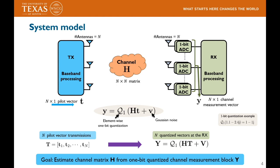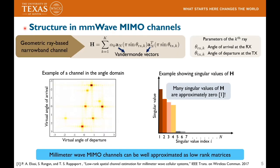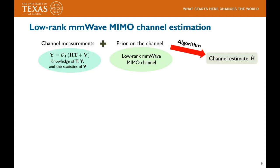Before I get into the details of channel estimation, let me explain about structure in mmWave MIMO channels. We consider a geometric ray-based narrowband channel where the matrix H can be expressed as a linear combination of several rank-1 matrices, each corresponding to a propagation ray in the environment. MIMO channels at mmWave exhibit special properties such as sparsity in the angle domain and low-rank structure, due to clustering in the propagation environment. In this paper, we focus extensively on exploiting the low-rank nature of mmWave MIMO channels. As shown in this figure, most of the singular values of the channel matrix are approximately zero, meaning the channel has fewer degrees of freedom.